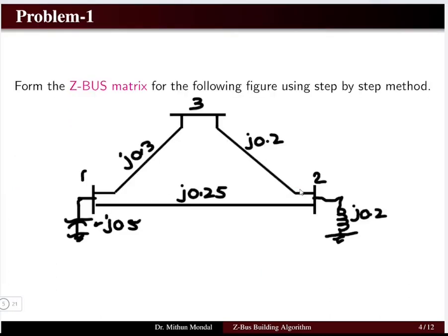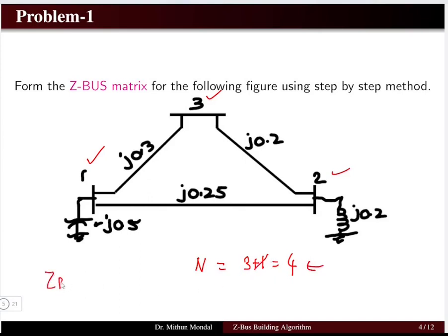We will understand the Z-bus building algorithm with two problems. The first problem shows a single line diagram with connections and given impedances between buses. The total number of buses is three plus one reference bus, equal to four. Since we neglect the reference bus, the size of the Z-bus will be three by three.